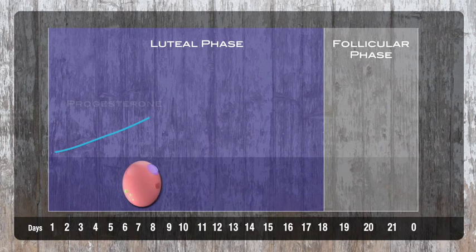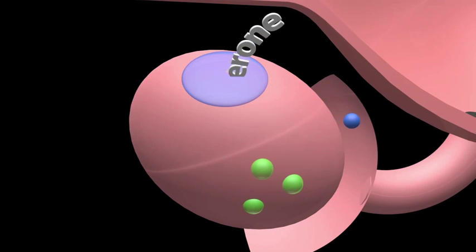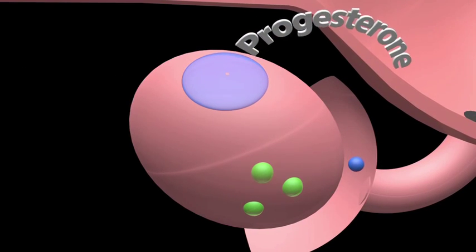The luteal phase is characterized by the presence of a corpus luteum which releases progesterone, the pregnancy hormone. This phase lasts around 18 days.